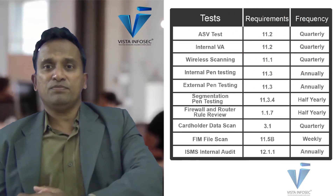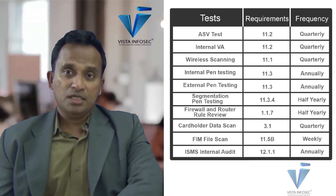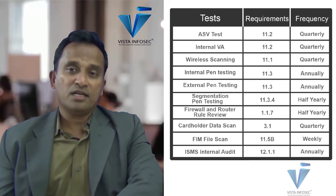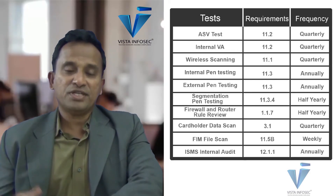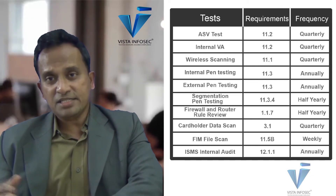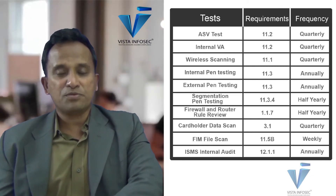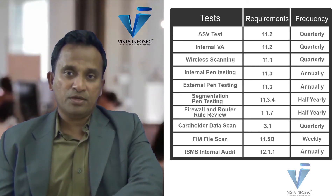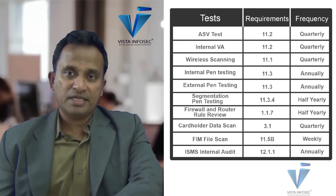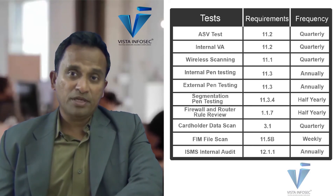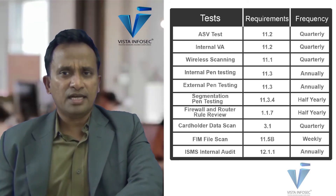What if you are doing PCI DSS for the first time? Instead of asking for quarterly reports for the full year, for the first audit I just need to check the last one cycle of reporting. But in the next year when you come for audits again, I will expect the full set — four reports for quarterly items, two for half-yearly, and so on. For the first time, you only need to show the last one cycle.